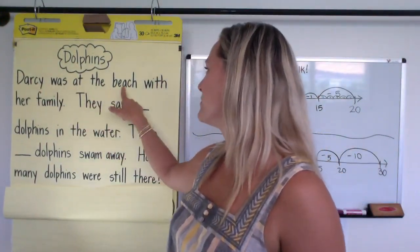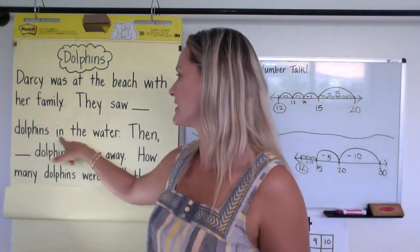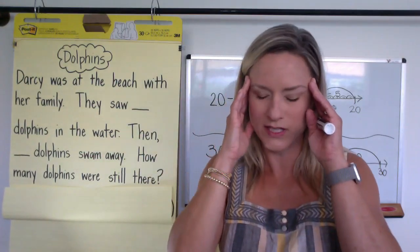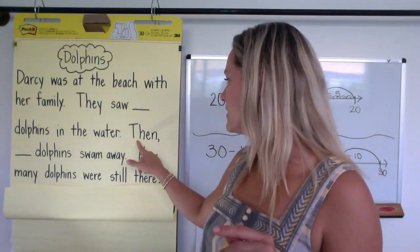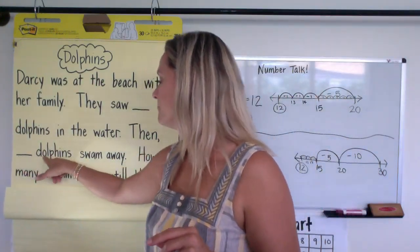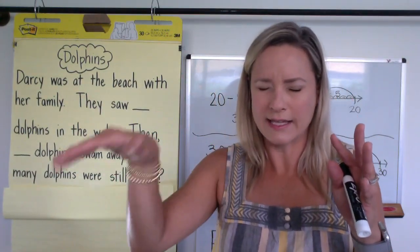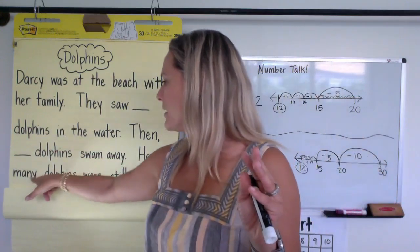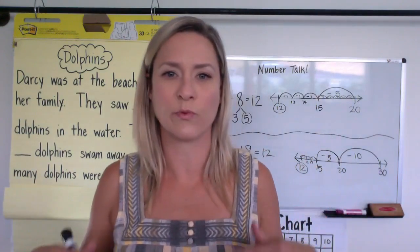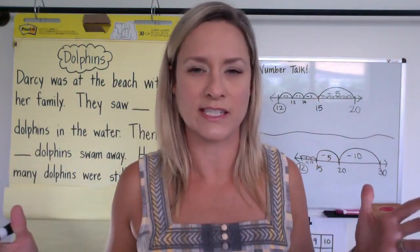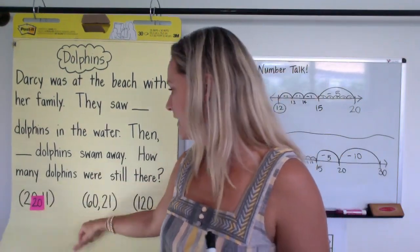So Darcy was at the beach with her family. They saw dolphins in the water. Everybody imagine yourself. Maybe you're on the beach. Maybe you're in a boat and you see dolphins. And then dolphins swam away. So you were watching the dolphins and then some dolphins swam away. How many dolphins were still there? So how many dolphins were still there that Darcy's family was able to look at and see? Let's check out our Just Right number sets.